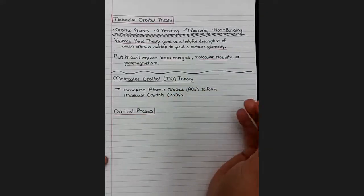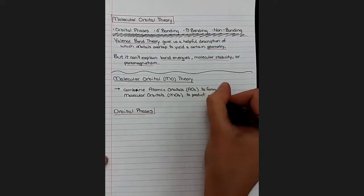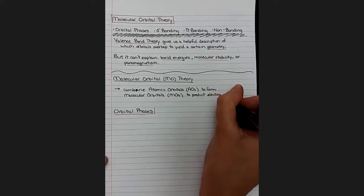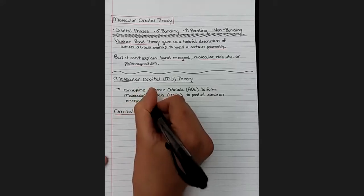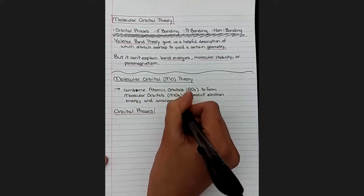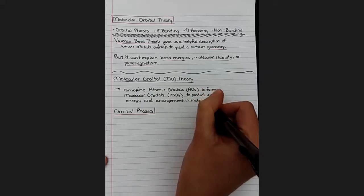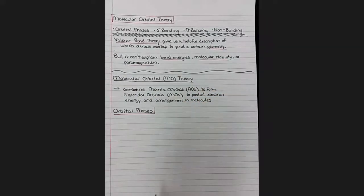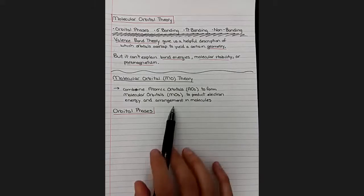And the reason we're going to do this, to combine these into molecular orbitals, is to predict electron energy and arrangements in molecules. So the energy is really a big feature of why molecular orbital theory is important, because the valence bond theory didn't tell us anything interesting about how much energy a particular electron or a particular overlap or a particular molecule had. So that's the information we're looking to get.